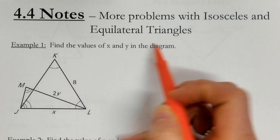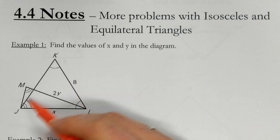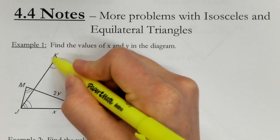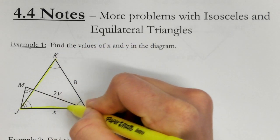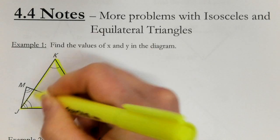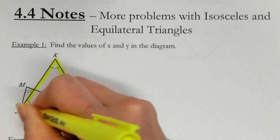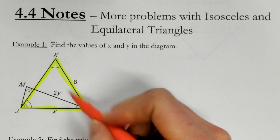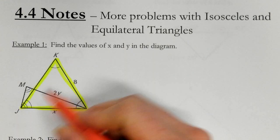So find the values of x and y in the diagram. Well, I see a couple different triangles here. So what I'm going to do is I'm going to first highlight one of the triangles because it's going to be easier to focus on one first. So KJL, we're going to look at that triangle.